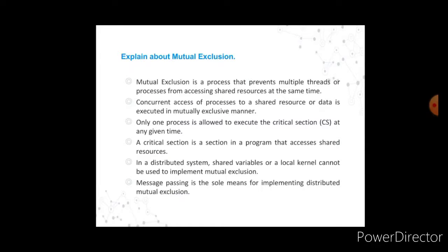Mutual exclusion is a concurrency control property introduced to prevent race conditions. It is a requirement that a process cannot enter its critical section while another concurrent process is currently executing in its critical section. That is, only one process is allowed to execute the critical section at any given instance of time. It ensures that concurrent processes access shared resources or data in a serialized way. No process can access a shared resource when any other process is accessing the same resource.